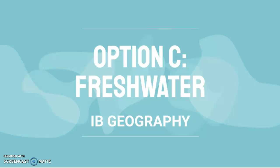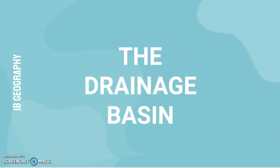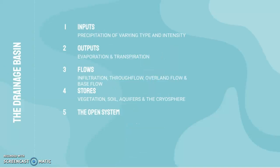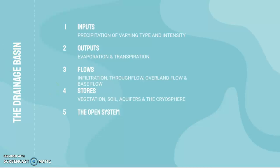This is the first video of Option C: Fresh Water for IB Geography, and the topic is the drainage basin. We'll go through subtopics including inputs, outputs, flows, and stores, and how these all contribute to the open system of the drainage basin. So why is the drainage basin considered an open system?